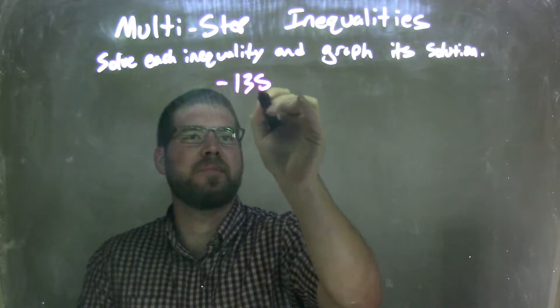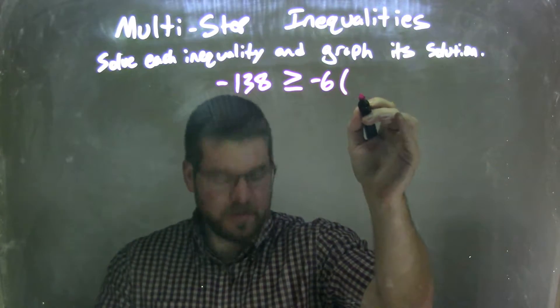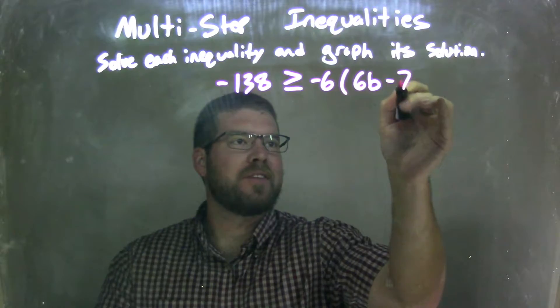So negative 138 is greater than or equal to negative 6 times 6b minus 7.